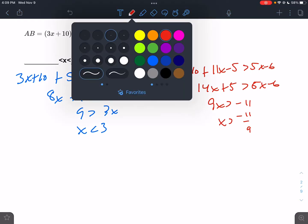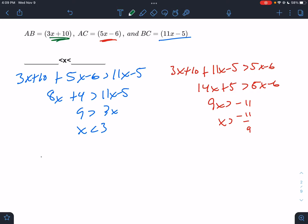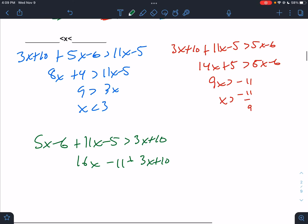Third possible situation, let's make this one the biggest one. 5x - 6 plus 11x must be greater than 3x + 10. So all these things must be true guys, and if all three things must be true, what ultimately has to be true?